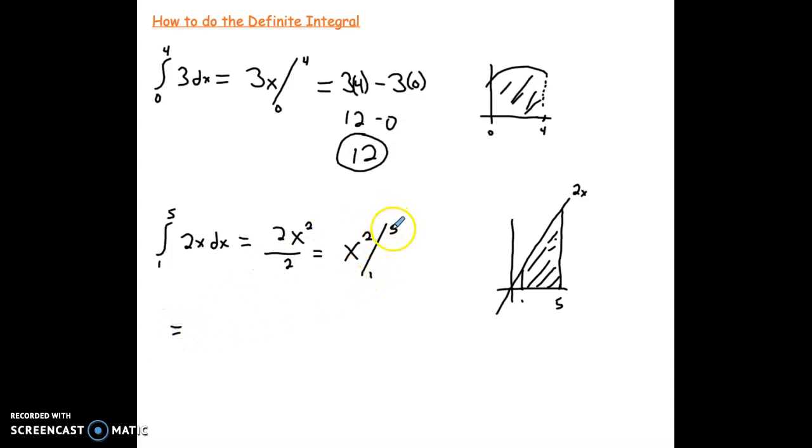So what we do, plug in the upper boundary first into our antiderivative. So 5, it's going to get squared. Minus. Plug in our lower boundary into the antiderivative. And then we evaluate. 5 squared is 25. Minus 1 squared. 24. That 24 represents this area. That's the process.